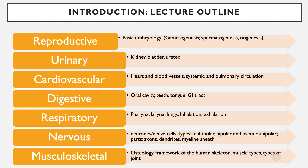The systems are: reproductive, urinary, cardiovascular, digestive, respiratory, nervous, and musculoskeletal. For reproductive, we will cover basic embryology — how the male and female gametes meet to become a fertilized unit, the zygote, which continues its journey. We are looking at fertilization and how the gametes are formed, known as gametogenesis, covering spermatogenesis for the male line and oogenesis for the female line.